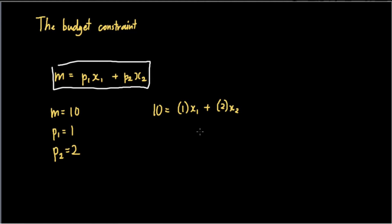So we set x sub two to be equal to zero, and what we find is that 10 would now be equal to one times x sub one, meaning on the budget line, when the consumer does not consume good two and only consumes good one, he would consume ten units of good one.